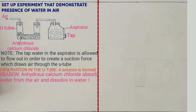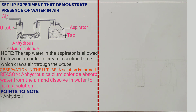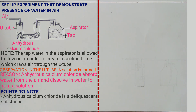Points to note from this experiment: anhydrous calcium chloride is a deliquescent substance. A deliquescent substance is one which, when exposed to the atmosphere, absorbs water and forms a solution. Other deliquescent substances include zinc chloride, anhydrous iron(III) chloride, and magnesium chloride.